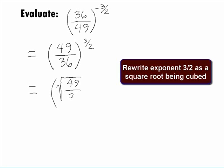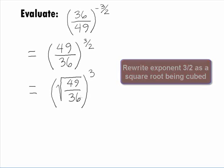So, we end up with the square root of 49 over 36, all raised to the 3rd power.